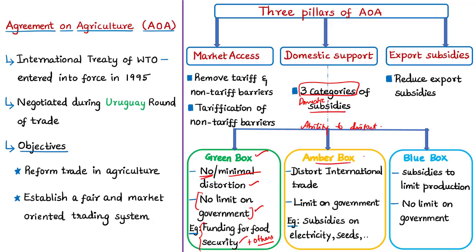Amber box subsidies distort international trade. If a country gives heavy subsidies on a particular agricultural product and exports those products internationally, it gains an advantage over countries not providing such subsidies, distorting trade. Examples include subsidies on electricity, seeds, fertilizer, and minimum support price — these can encourage excessive production and distort trade balance. The WTO prescribes limits on amber box subsidies.